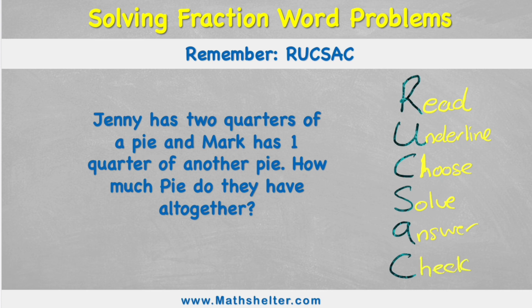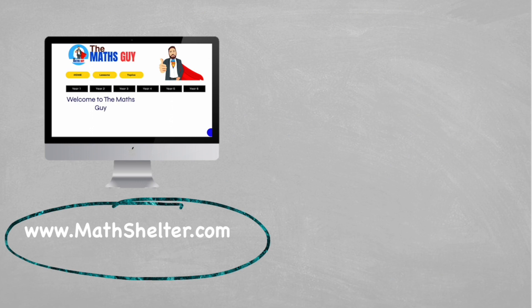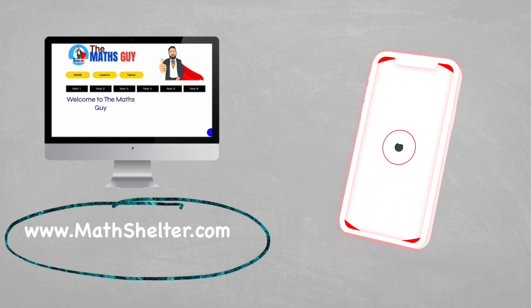Let's read our question: Jenny has two quarters of a pie and Mark has one quarter of another pie. How much pie do they have altogether? We just read it — let's give ourselves a tick.